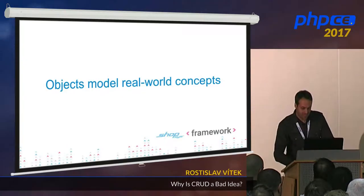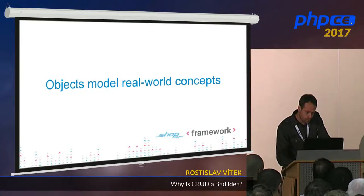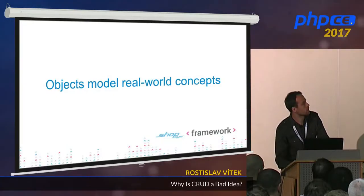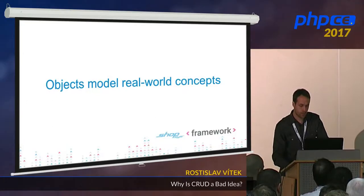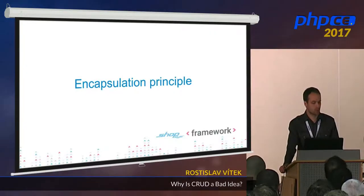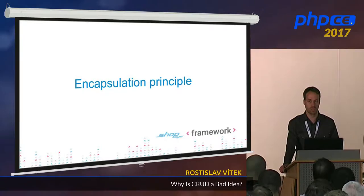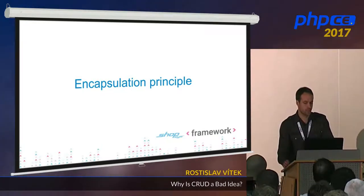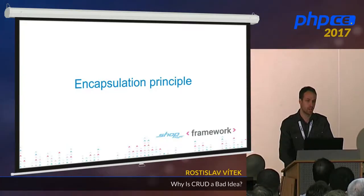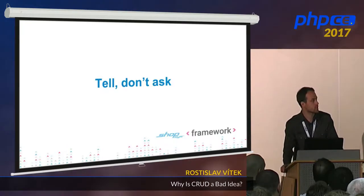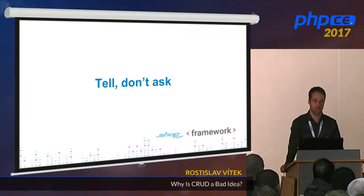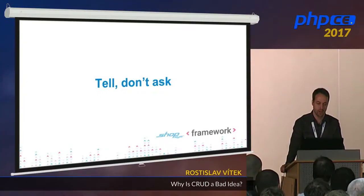An object is something that has data and behaviour — that means properties, typically private properties, and some public methods which are used as an API for working with that object. An object models things from the real world and implements its relationships, concepts, and behaviour. Another key principle is encapsulation: properties should be private and not exposed publicly; they should be accessed only using the public methods of the object. In other words, the principle is 'tell, don't ask' — we should tell objects what to do and not ask them about their private data.